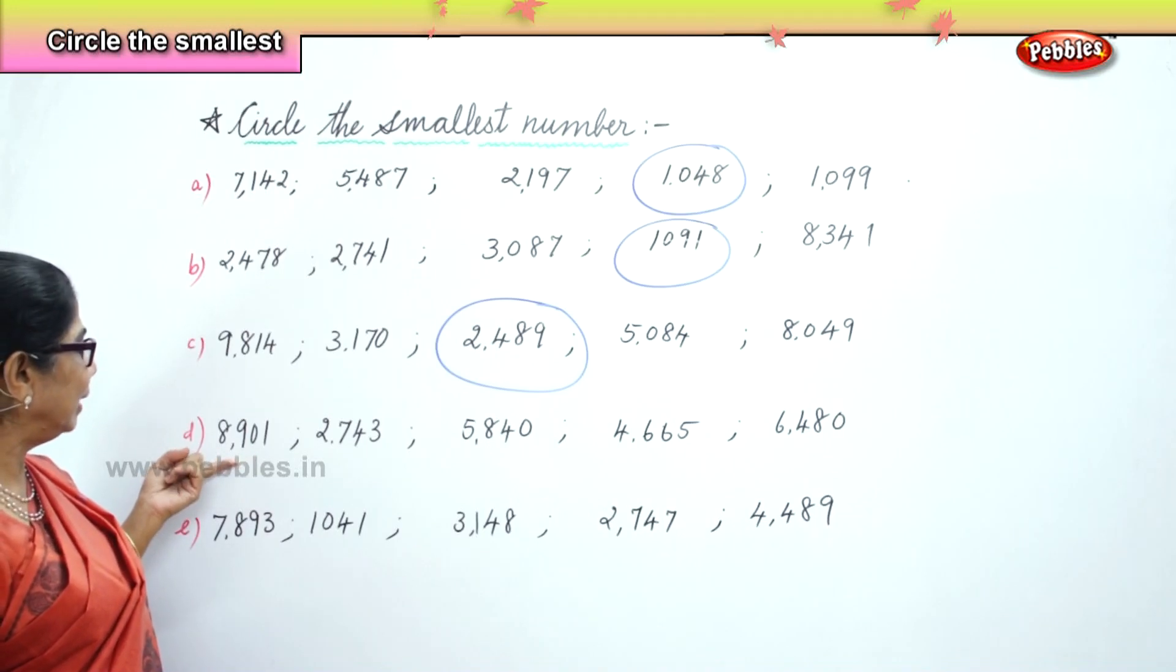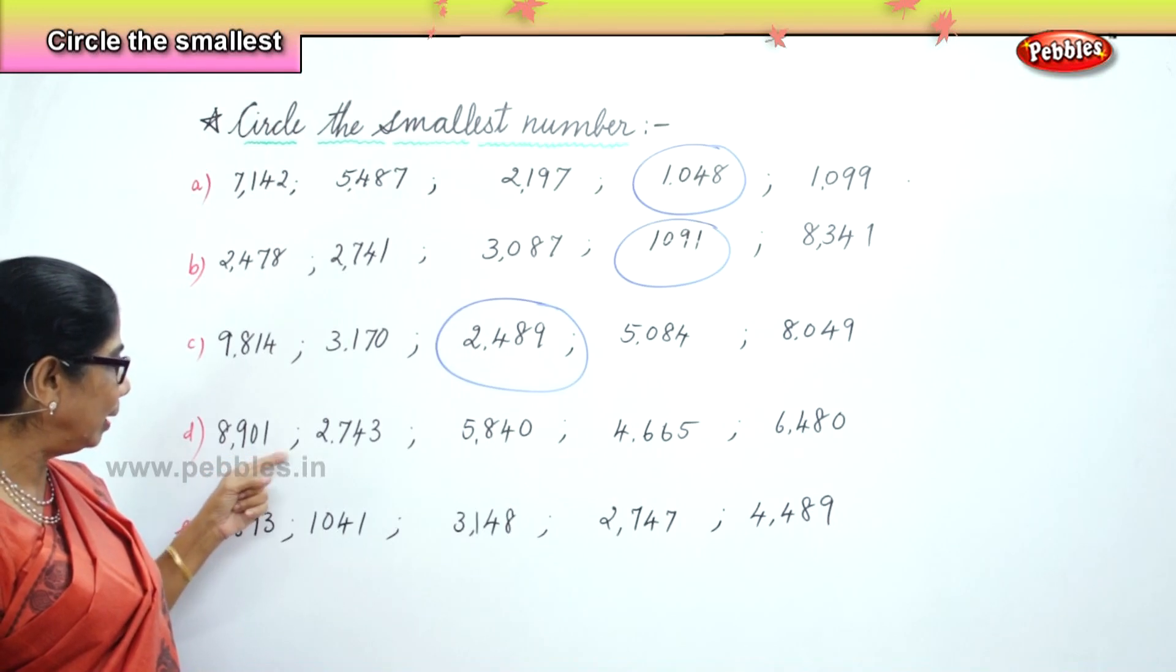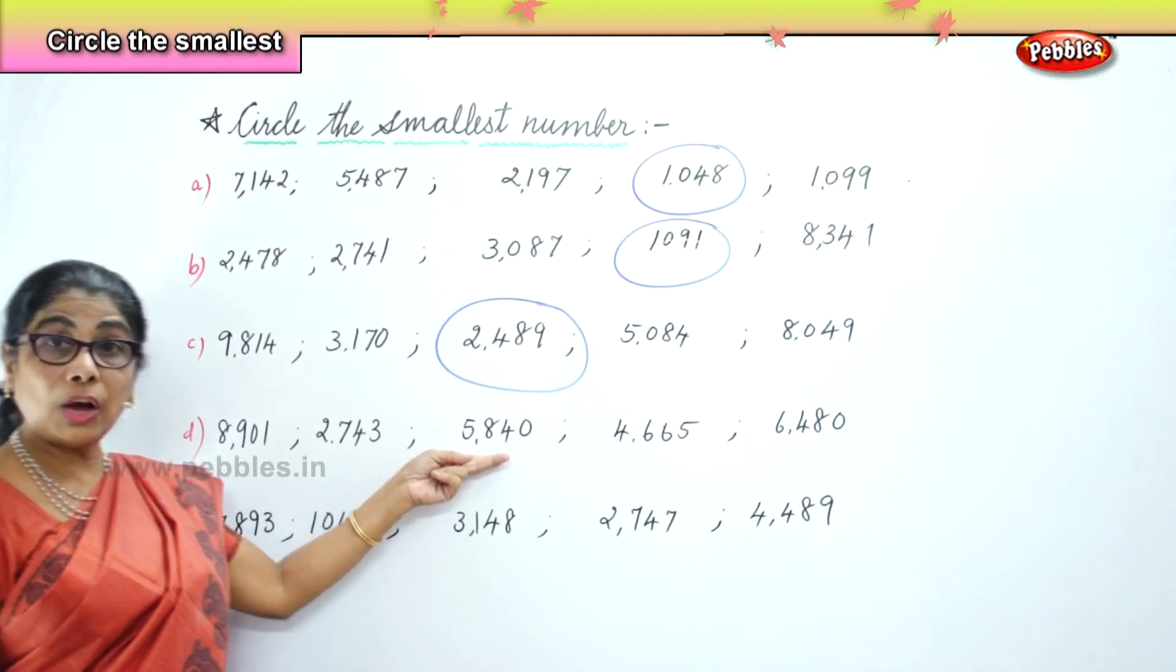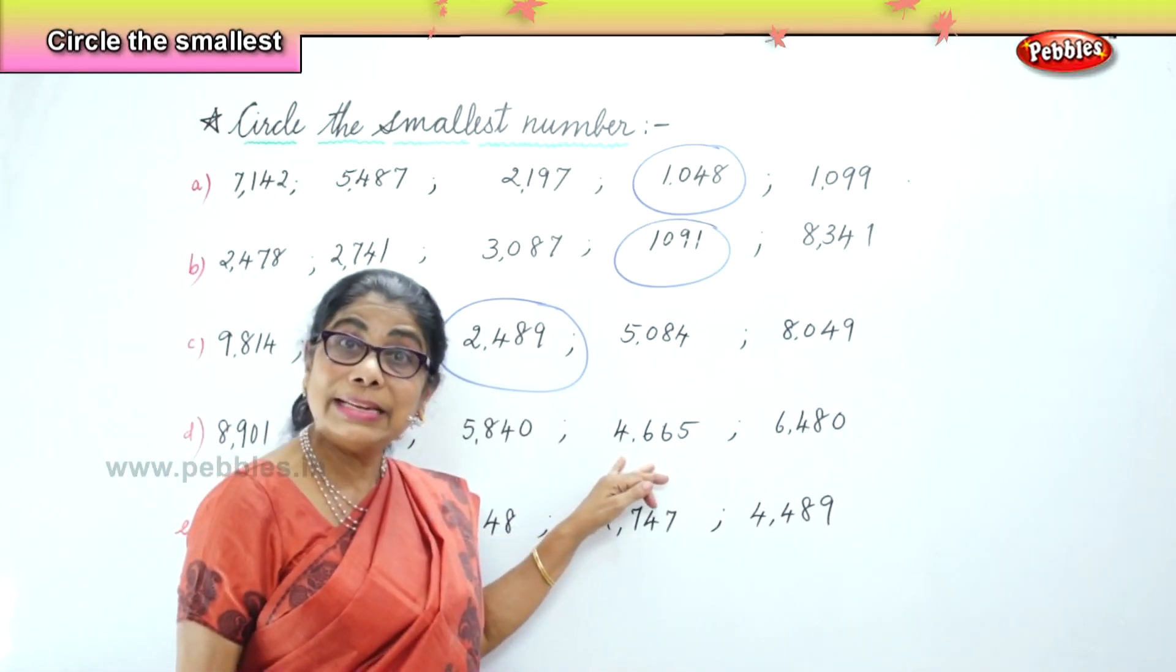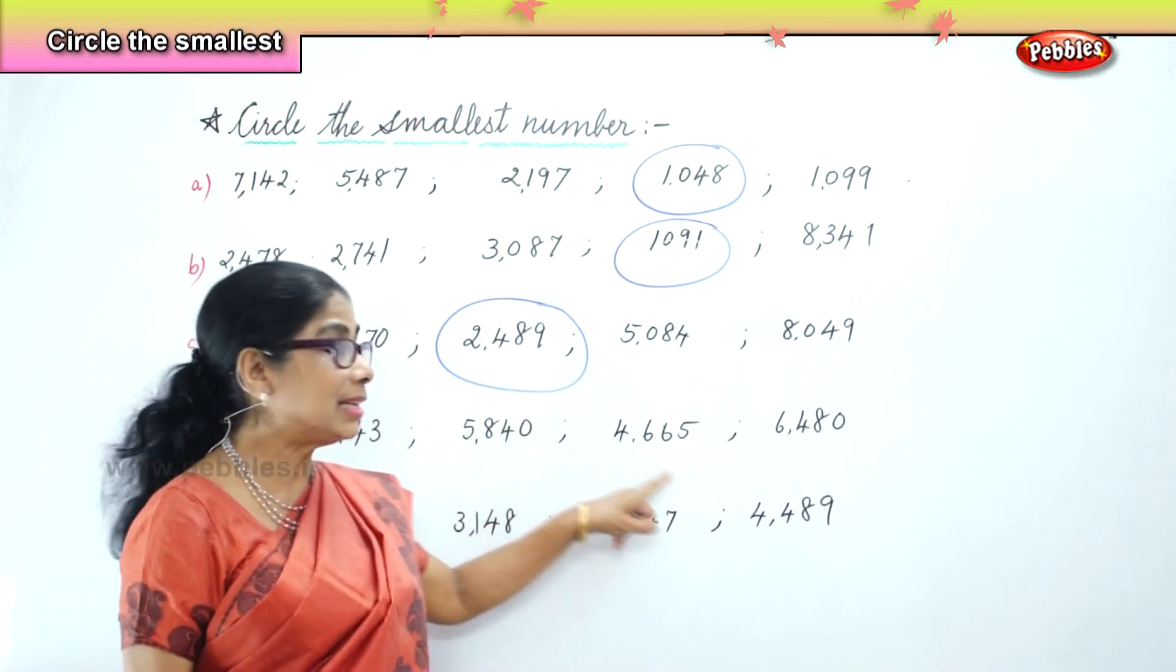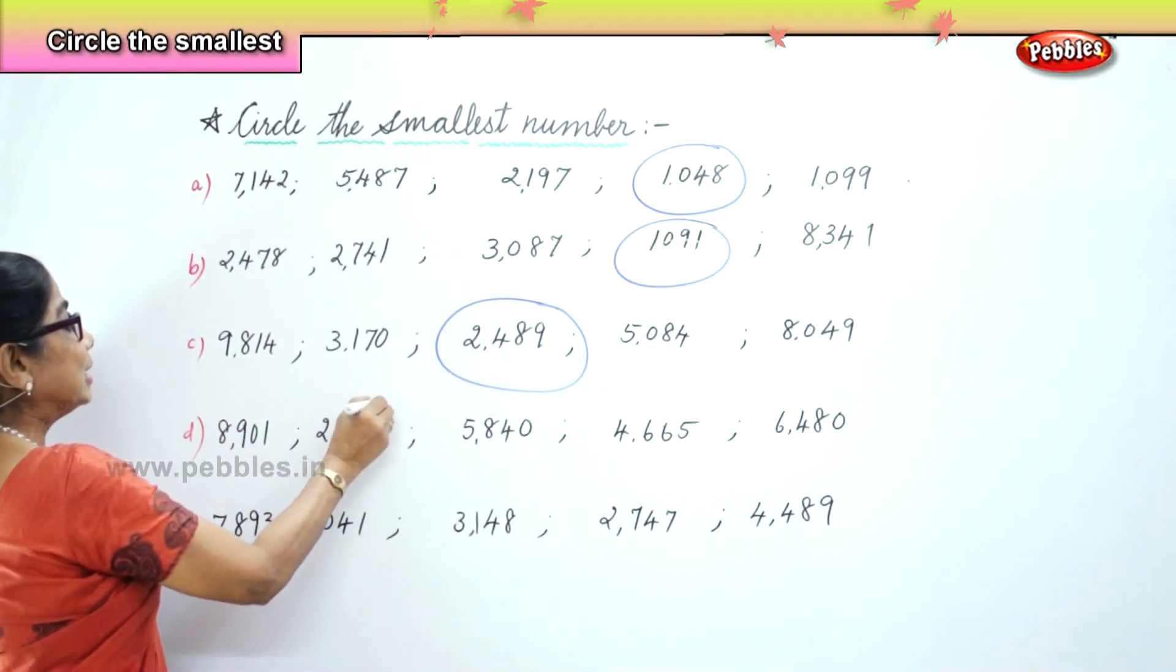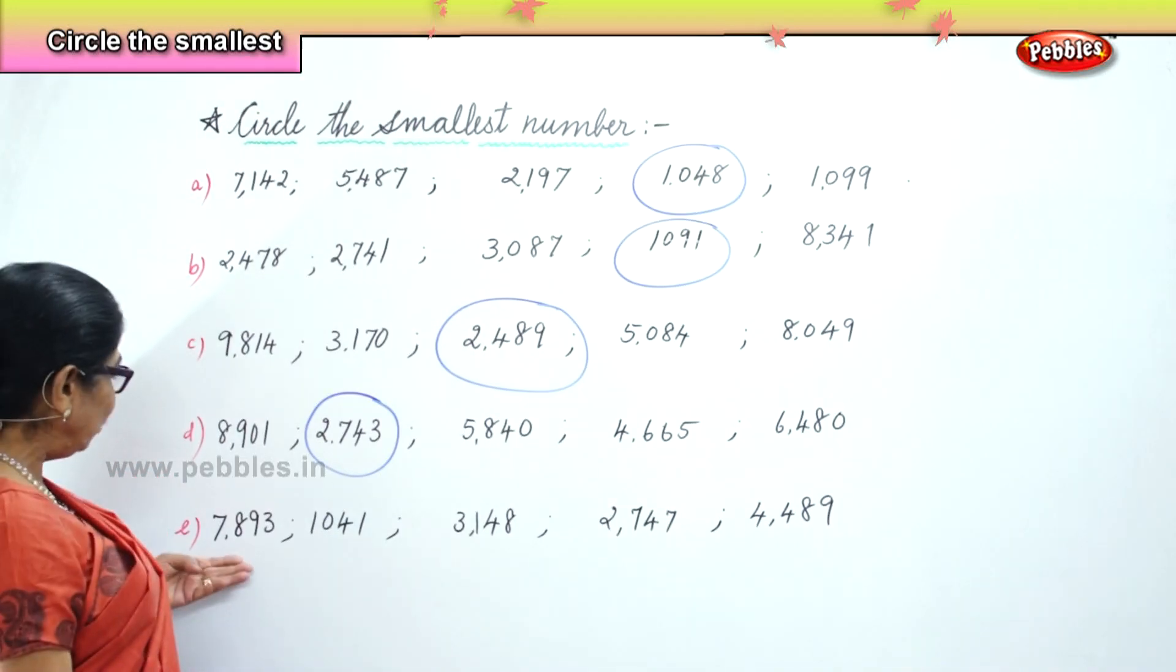Now in the next set we have 8,901, 2,743, 5,840, 4,665, 6,480. Let us look at the thousands: 8,000, 2,000, 5,000, 6,000, and 4,000. Certainly 2,743 is the smallest of the five sets of numbers given to us.